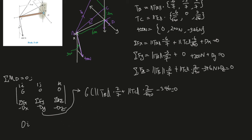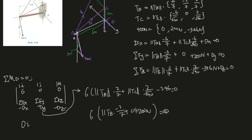For the k-component, covering those two rows: one times six times the y-force, which is TB times negative three over seven, plus zero, plus 200 newtons equals zero. This is a really good sign because this is one equation with one unknown - we're solving for TB. This single equation will give us TB directly.